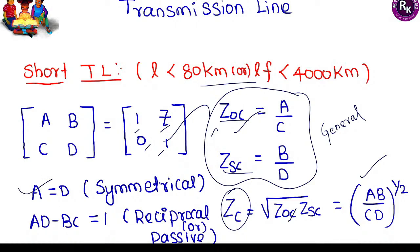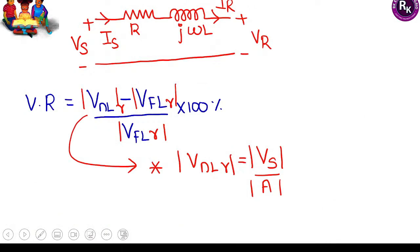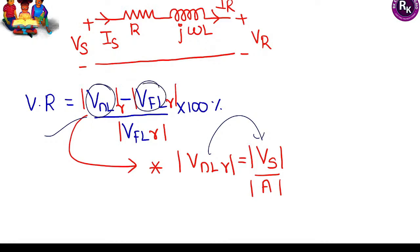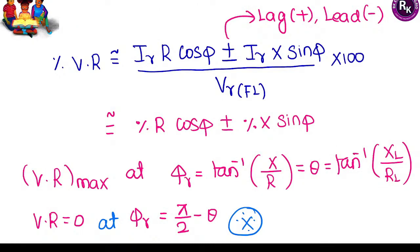For a short transmission line, the no-load voltage at the receiving end equals the sending end voltage divided by ABCD parameter A. The general formula for voltage regulation applies. For approximate voltage regulation, it can be rewritten using percentage resistance and percentage reactance: plus sign for lagging power factor, minus sign for leading power factor. Voltage regulation becomes maximum when the receiving end power factor angle equals the impedance angle of the transmission line.